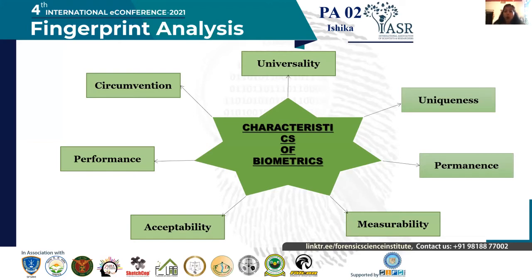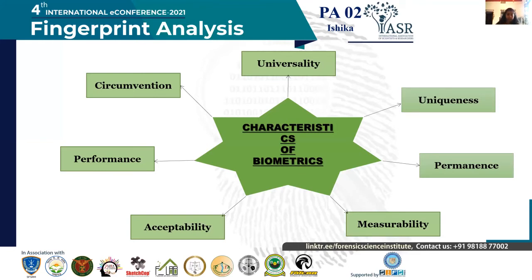Third, permanence — this shows how well a particular characteristic resists changes over time and with advancing age. Fourth, measurability — it measures how easy it is to acquire a characteristic with which we can later authenticate a user. Fifth, acceptability — a measure of how acceptable the particular characteristic is to the user of the system. Sixth, performance — a set of metrics measuring how well a system functions, including accuracy, speed, and error rate. Lastly, circumvention — describes the ease with which a system can be tricked by a falsified biometric identifier.